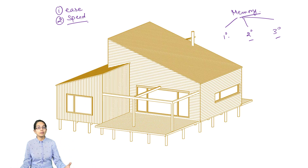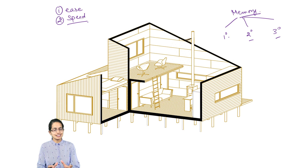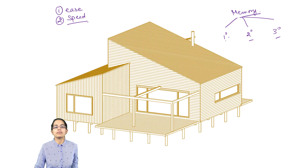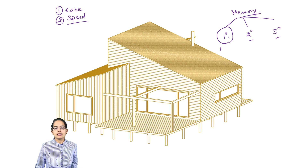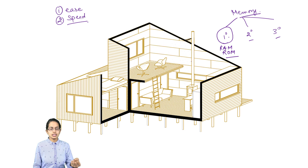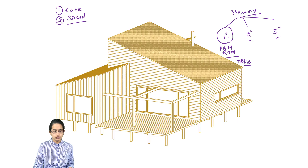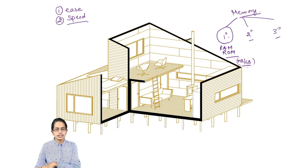Similar goes with computer memory. Since computer memory has so much information, there should be some ease and speed with which the computer is able to access and process the information. The primary memory components are RAM and ROM. These are attached to the motherboard and are the most easy and fastest to access. Usually the units are smaller — in megabytes and gigabytes — which is what you typically see with RAM.